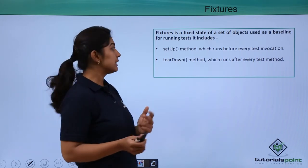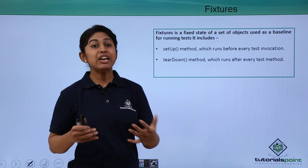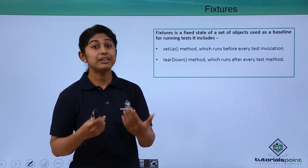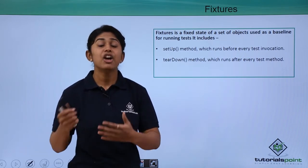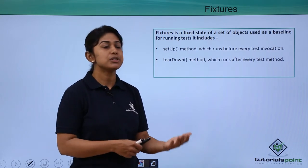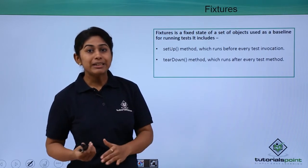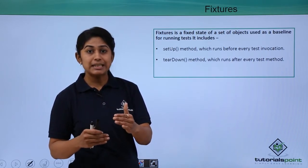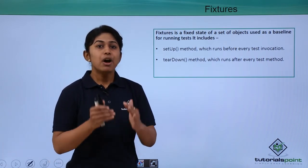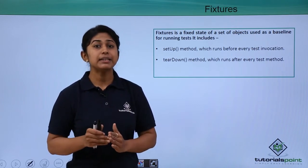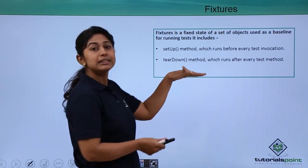A fixture has two methods: the setup method and the teardown method. In the setup method you are creating or setting up the environment for your test execution. So if you are testing any browser or website, launching the website or initializing the browser will be included in the setup method. The teardown method is used after executing the test case and is used for releasing all the allocated objects. The releasing code will be included in the teardown method.